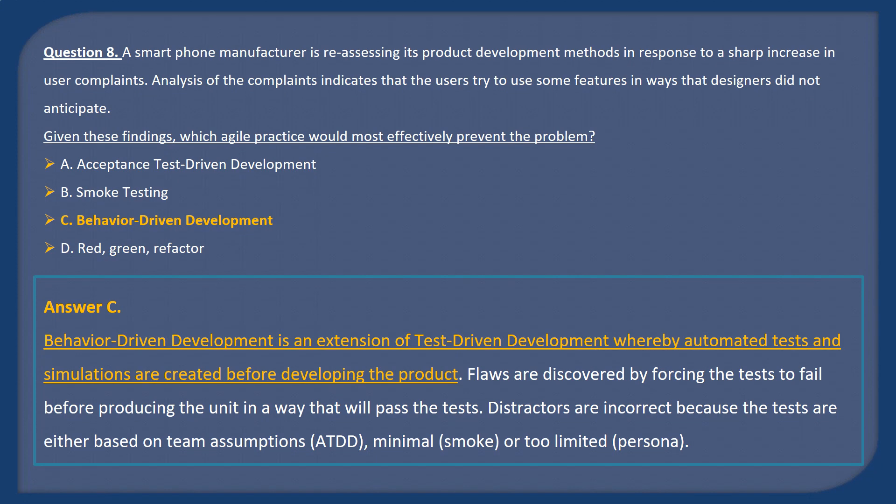Answer C. Behavior-driven development is an extension of test-driven development whereby automated tests and simulations are created before developing the product. Flaws are discovered by forcing the test to fail before producing the unit in a way that will pass the test. Distractors are incorrect because the tests are either based on team assumptions (ATDD), minimal smoke, or too limited in personnel.